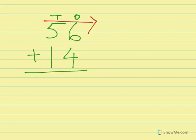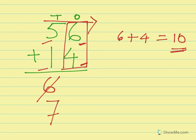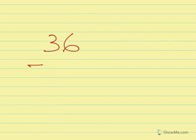First example: 56 plus 14. In the 10s position we have 5 and 1, so that adds up to 6. In the 1s position we have 6 and 4. We know 6 plus 4 equals 10, and 10 is a double-digit number, so we call it a carrying number. Since we have a carrying number in the ones place, the 6 changes into 7, and the end number of this carrying number is 0. So our final answer is 70.